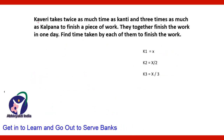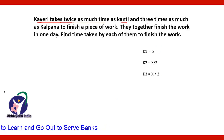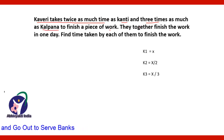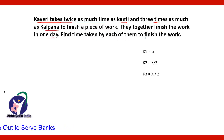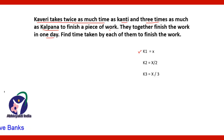The next question: Kaveri takes twice as much time as Kanti and thrice as much as Kalpana to finish a piece of work. They together finish the work in 1 day. Find the time taken by each. Let K1 = Kaveri, K2 = Kanti, K3 = Kalpana, and let Kanti finish the work in X days.